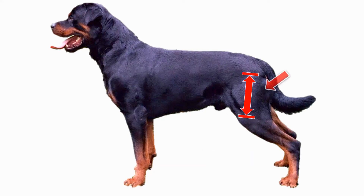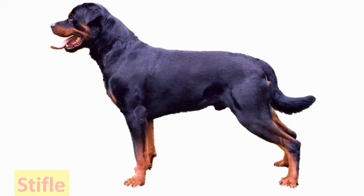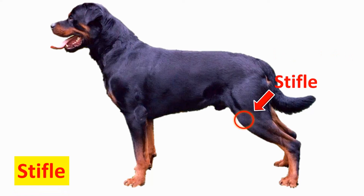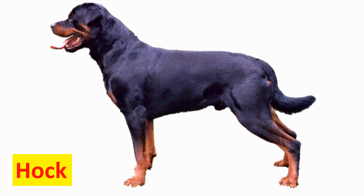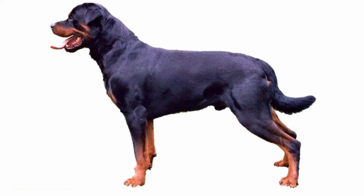Upper thigh — the upper thigh is a part of the dog's leg located above the knee. Stifle — the stifle is the dog's knee; it is a complex joint in the hind limb of quadrupeds. Lower thigh — the lower thigh is the part of the hind limb beneath the knee down to the hock. Hock — from Old English for heel, the hock is the joint located on the dog's back leg below the stifle. The rear pastern is right here.